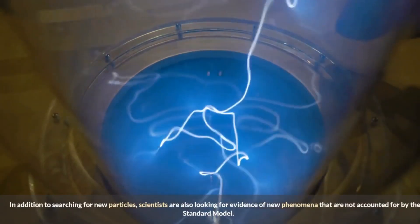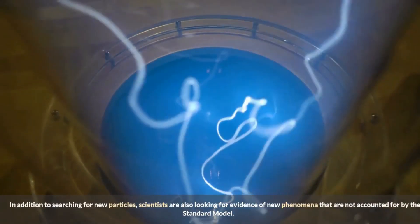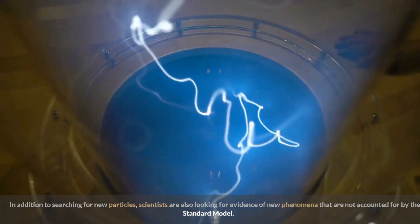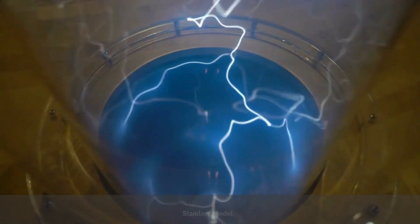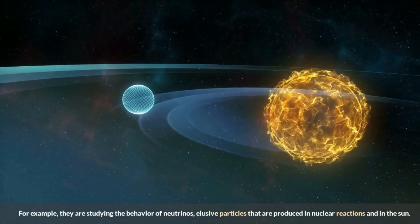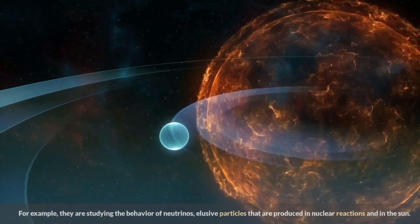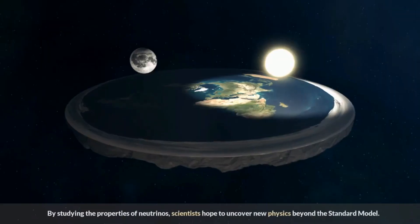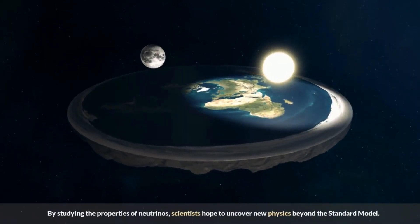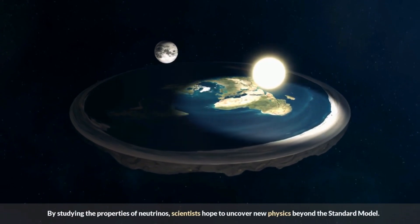In addition to searching for new particles, scientists are also looking for evidence of new phenomena that are not accounted for by the standard model. For example, they are studying the behavior of neutrinos, elusive particles that are produced in nuclear reactions and in the sun. By studying the properties of neutrinos, scientists hope to uncover new physics beyond the standard model.